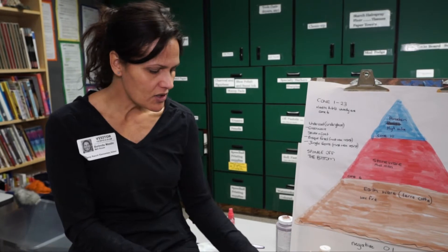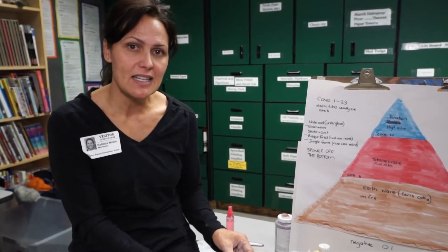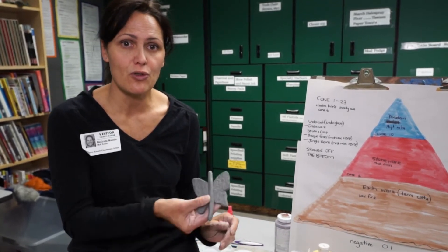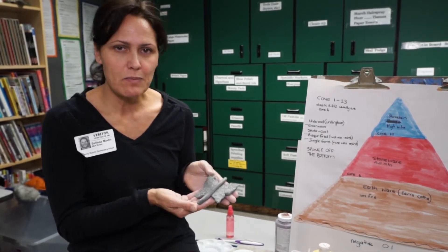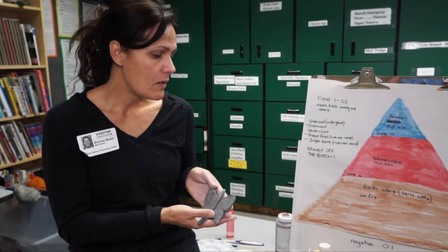Okay, having said that, we're going to go into glazes so you can understand what you can use on your greenware. Now, this here is greenware - it means it's just been made, it is a wet piece of clay.